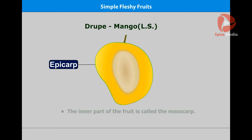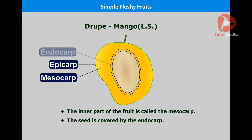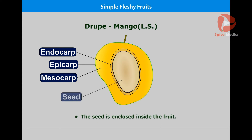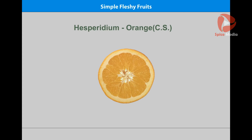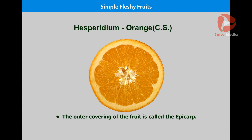In mango, the inner part of the fruit is called the mesocarp. The seed is covered by the endocarp, and the seed is enclosed inside the fruit. Let us look at the orange now. The outer covering of the fruit is called the epicarp.